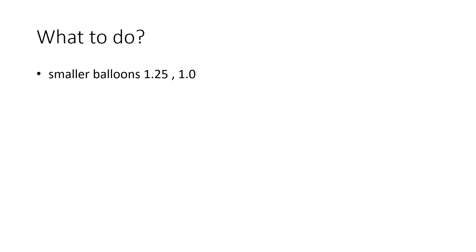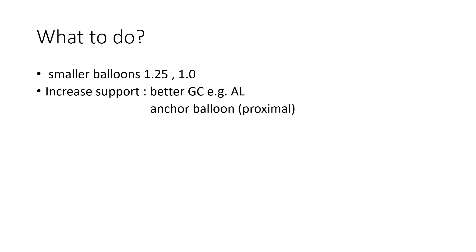So what to do in such a situation? There are several solutions when a balloon does not cross a lesion. Take a smaller balloon like 1.25, or if available, a 1 mm balloon. Increase support — this can be done by having a better guide catheter, and in this case an Amplatz left catheter will provide better support. Or use an anchor balloon proximal to the lesion, or use a guide catheter extension.